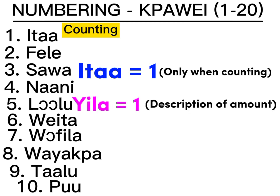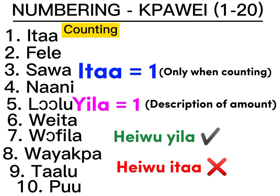For example, somebody can tell me to count those chairs. If I want to count them, I will start with Ita, Fele, Sawa, Nani. But if somebody asks me how many chairs are there, and there is only one chair, I will have to tell him Yila — that is one. Chair Yila Miabi, or Hewi Yila Miabi: it is only one chair that is there. I cannot say Chair Yita Miabi or Hewi Yita Miabi. So, Ita is used only when you are counting.